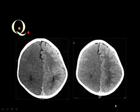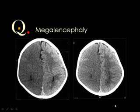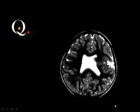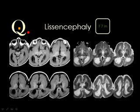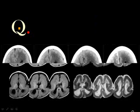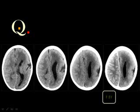Quiz review of cases: subependymal heterotopia, hemimegalencephaly on the right side, closed lip schizencephaly on the left side — note the diverticulum of the ventricle — lissencephaly, and hemimegalencephaly of the left cerebral hemisphere.